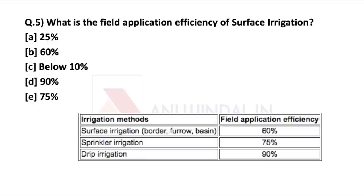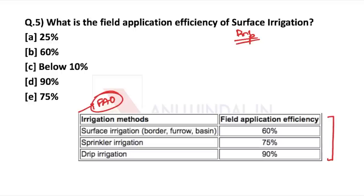The last question is: what is the field application efficiency of surface irrigation? This data is from the FAO — Food and Agricultural Organization. The field application efficiency is 60% for surface irrigation, 75% for sprinkler irrigation, and 90% for drip irrigation. So the answer for surface irrigation is 60%. Just factual information to remember.